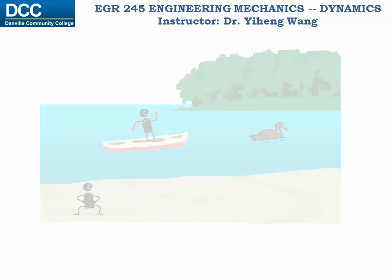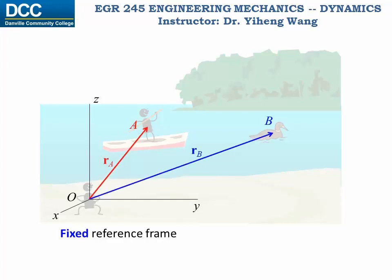Since the person on the bank is not moving, we can set up a fixed reference frame, that is a 3D rectangular coordinate system originated on him. To his eyes, both the person on the boat and the duck are moving, and at any given point their positions can be represented by position vectors, RA and RB.